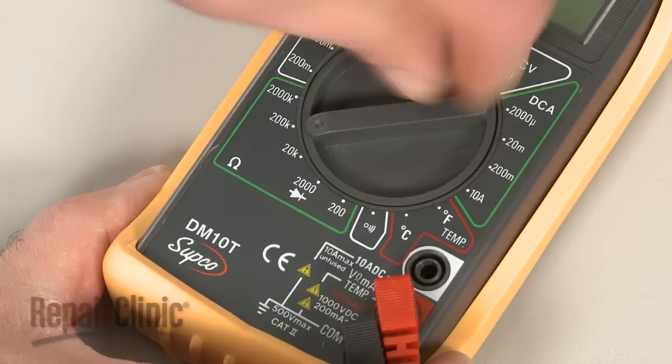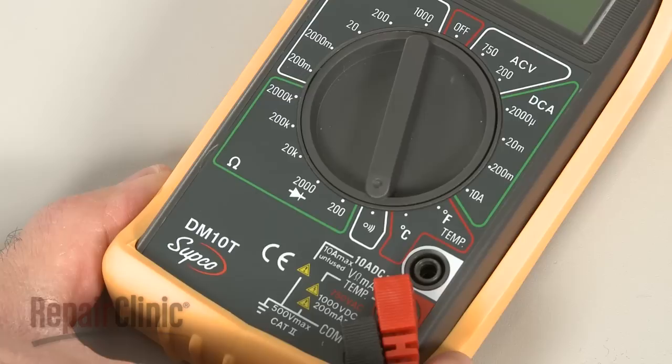When using a digital model, again rotate the dial to the lowest setting for ohms of resistance, or resistance with tone if your meter has this option.